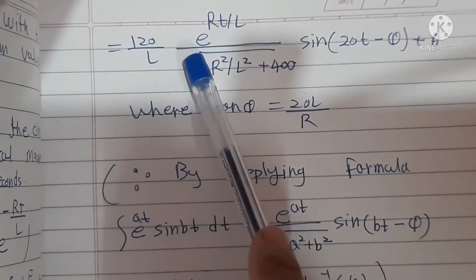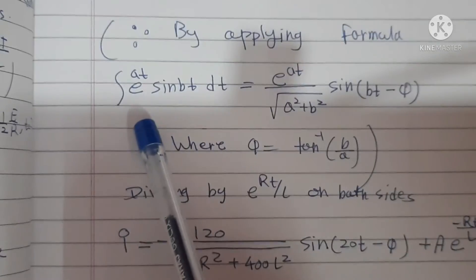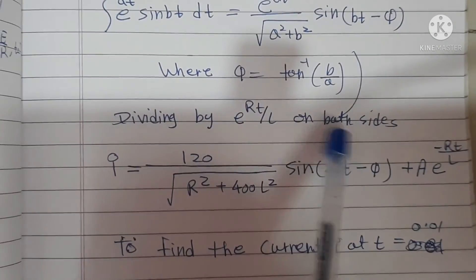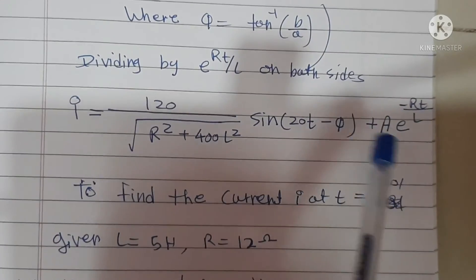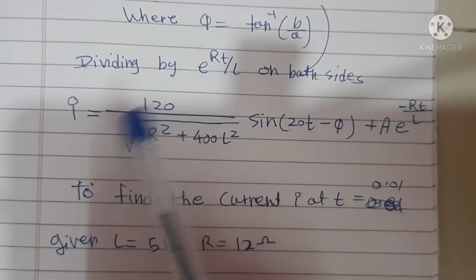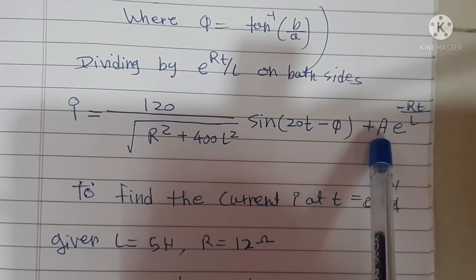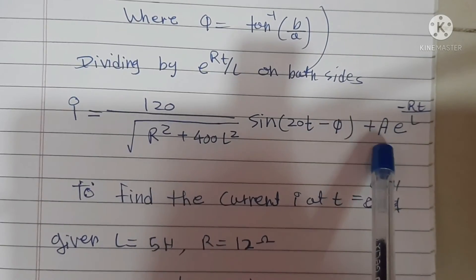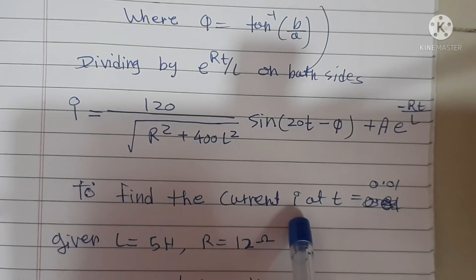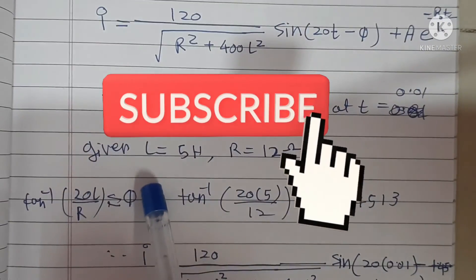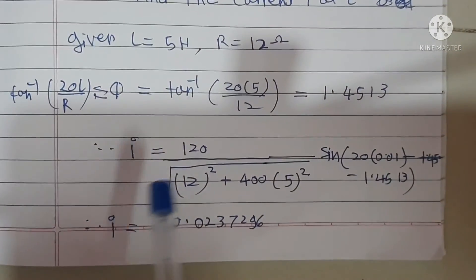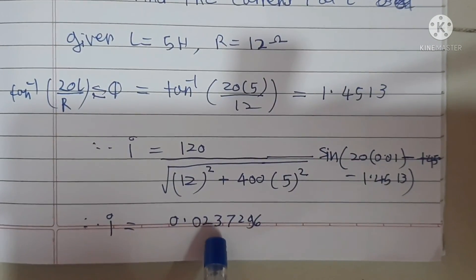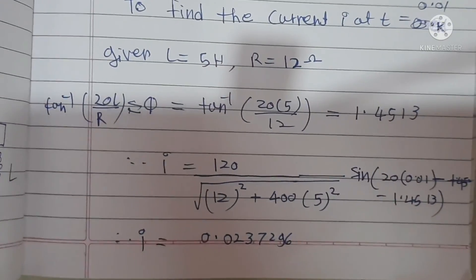By applying that standard formula we get the integrated result. Since e^(Rt/L) appears on both sides, we divide both sides by it to get the expression for current I. After substituting the initial conditions — I equals 0 when T equals 0, with L equals 5 and R equals 12 given — we substitute all values and calculate the current as 0.023796 amperes. Thank you students. If you like my videos please subscribe to my channel and keep practicing.